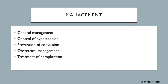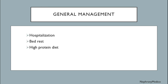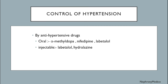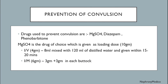Management includes: general measures, control of hypertension, prevention of convulsion, obstetric management, and treatment of complications. General measures: hospitalization, bed rest, high-protein diet. Control of hypertension may be done by antihypertensive drugs — oral: alpha-methyldopa, nifedipine, labetalol; injectable: labetalol, hydralazine. Prevention of convulsion — drugs used include magnesium sulfate, diazepam, and phenobarbitone. Magnesium sulfate is the drug of choice, given as a loading dose of 10 grams.